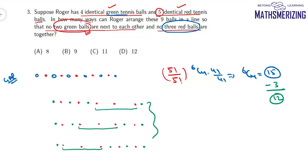So total number of cases when no two green balls are together and no three red balls are together is simply 12 and that's your option number D.